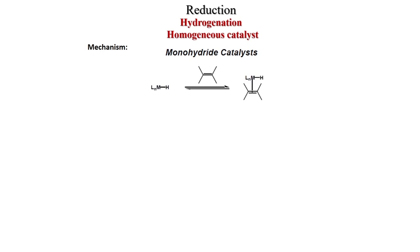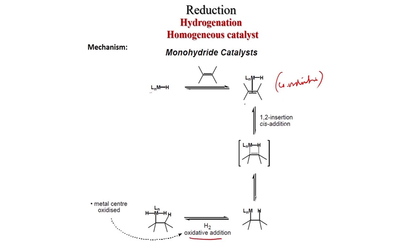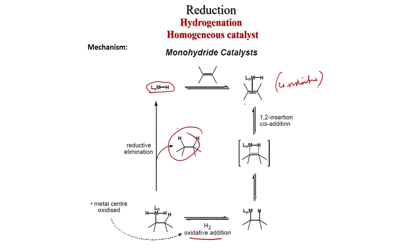In the monohydride catalyst, coordination happens between the metal hydride and the alkene, then 1,2-insertion gives a new species, then hydrogen adds via oxidative addition, and reductive elimination generates the product alkene, returning the metal-ligand hydride complex. The only difference from the dihydride pathway is starting with a ligand-metal-hydride complex.